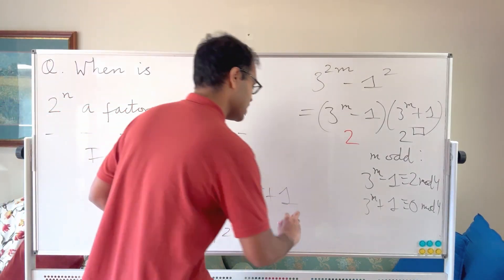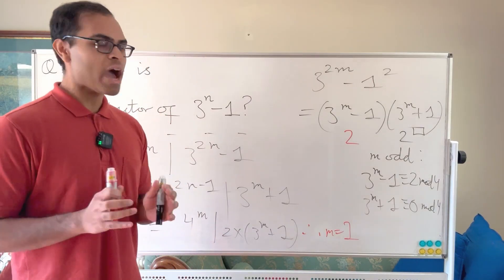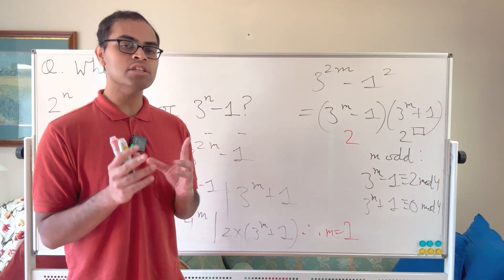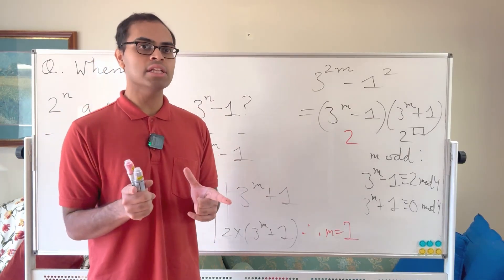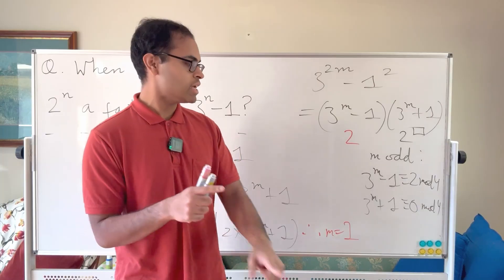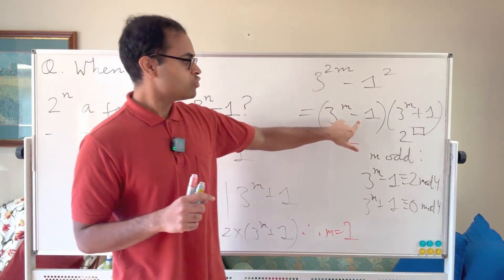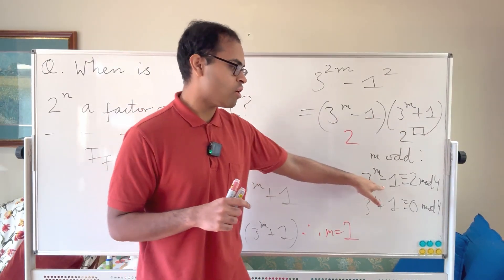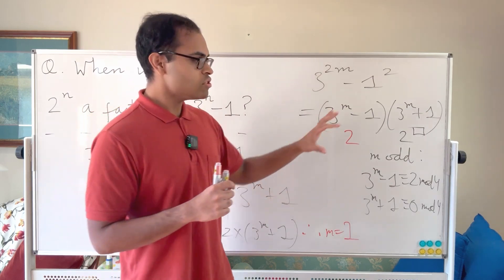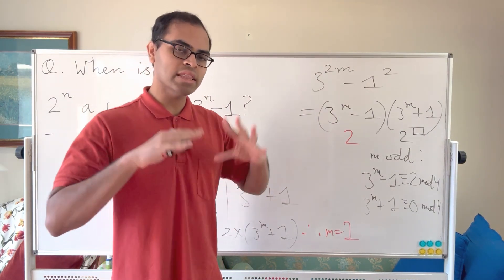Since 4^m grows much faster than 3^m + 1, once 4^m exceeds 2·(3^m + 1) it does so forever. So when m is odd, m must equal 1. For the case when m is even, I'll leave it as an exercise — the roles of 3^m − 1 and 3^m + 1 reverse, and you should get m equals 2 as the only solution, completing the proof.